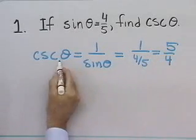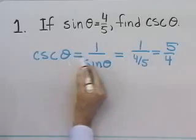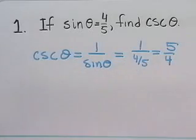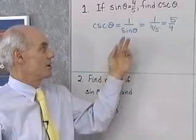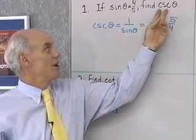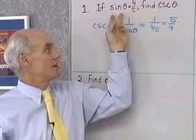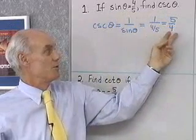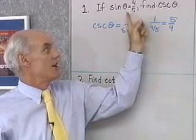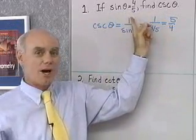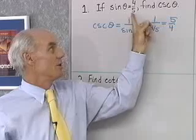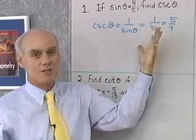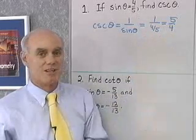We could, of course, go directly and skip showing that intermediate work, because we know that cosecant theta and sine theta will always be reciprocals. That means their product is 1, so if one of them is 4 fifths, the other one must be 5 fourths.